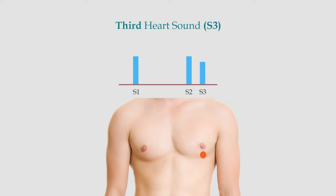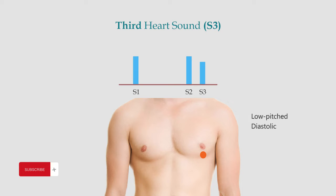Unlike S1 and S2, the third heart sound is not produced due to valve closure but rather due to the vibration of the left ventricular wall during rapid ventricular filling during diastole. Therefore, in contrast to S1 and S2, the third heart sound is low pitched.